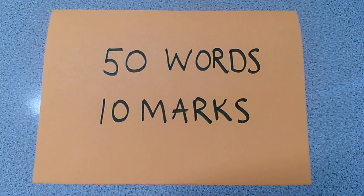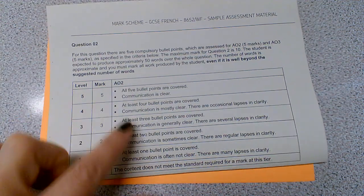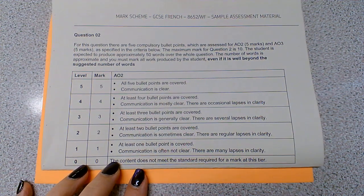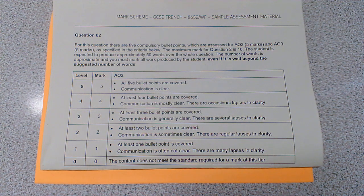We're going to go through the mark scheme very quickly and then I'm going to show you an example and give you a model answer. The 50 words task on the foundation paper is worth 10 marks. You are marked for AO2 first of all, which basically addresses whether you have covered the bullet points — you will be given 5 bullet points to cover and they will be in English. It's really important that you learn vocabulary; vocabulary is more important than ever in the new GCSE.